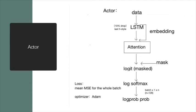The loss of the actor network is MSE of logit and masks for each batch, and the optimizer is Adam.